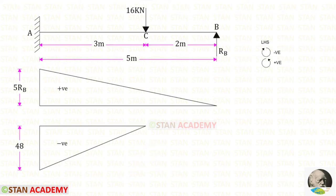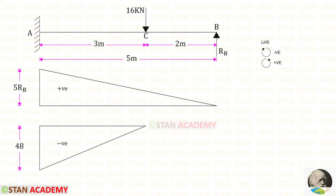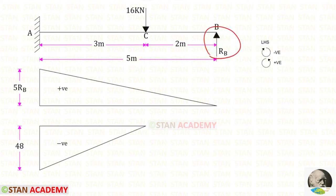Now we make the bending moment diagrams separately — first for Rb, then for the load 16 kN — and find the bending moment about point A using the left-hand side rule, where clockwise is negative and anticlockwise is positive. For Rb acting anticlockwise, it is positive, and the distance is 5, so the bending moment is 5Rb.